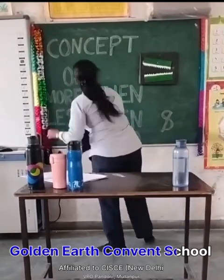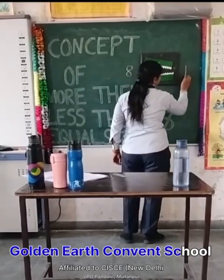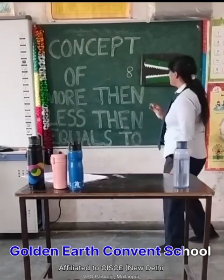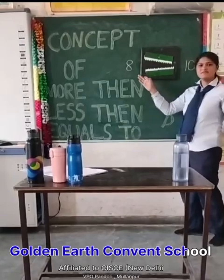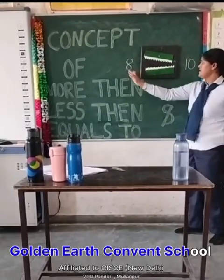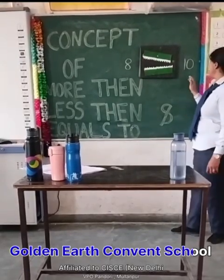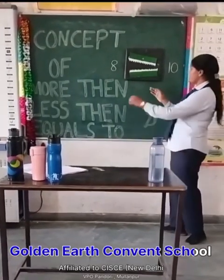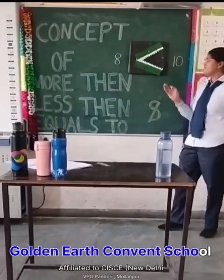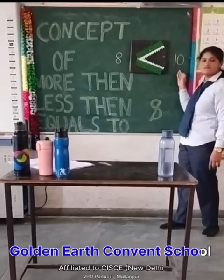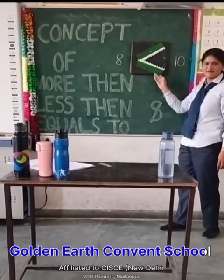Here I have number eight and here I have number ten. Which sign do we use? Which number is greater — eight or ten? Ten is greater. So the crocodile opens his mouth toward ten. We use this sign to show the greater number — the more than sign.